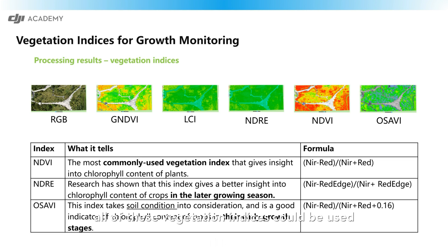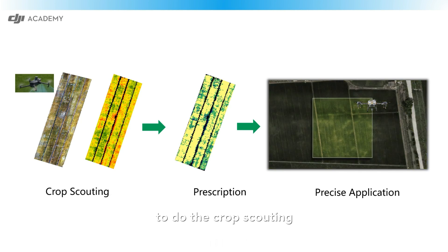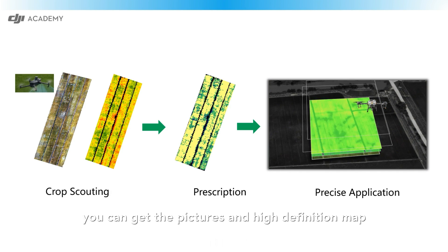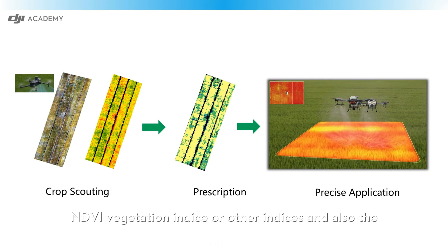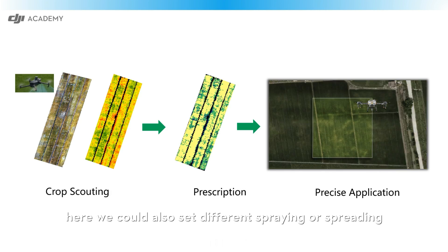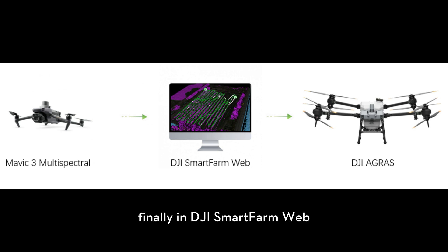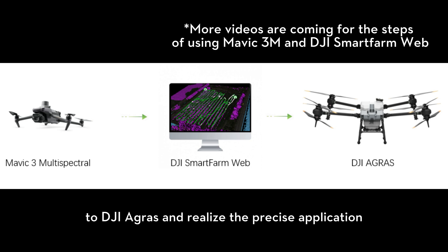All of these vegetation indices can be used based on your actual situation — this is just for your reference. First, we use the Mavic 3 Multispectral to do crop scouting. It captures images and a high-definition map after reconstruction in DJI Smartfarm web. Then we can get the NDVI vegetation index or other indices, as well as the prescription map. We can also set different spraying or spreading parameters for the task. Finally, in DJI Smartfarm web, we can share the field and the prescription map to DJI Agras to realize precise application.